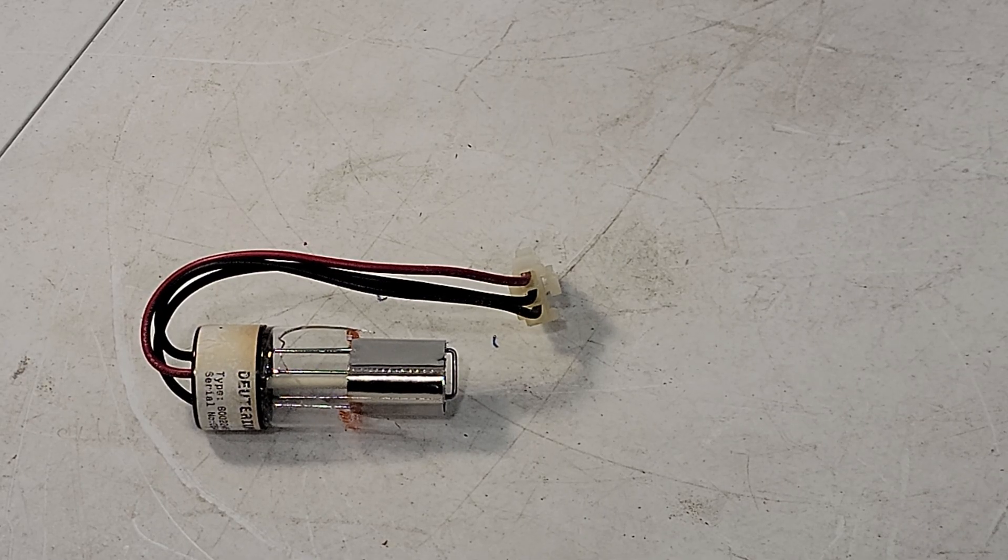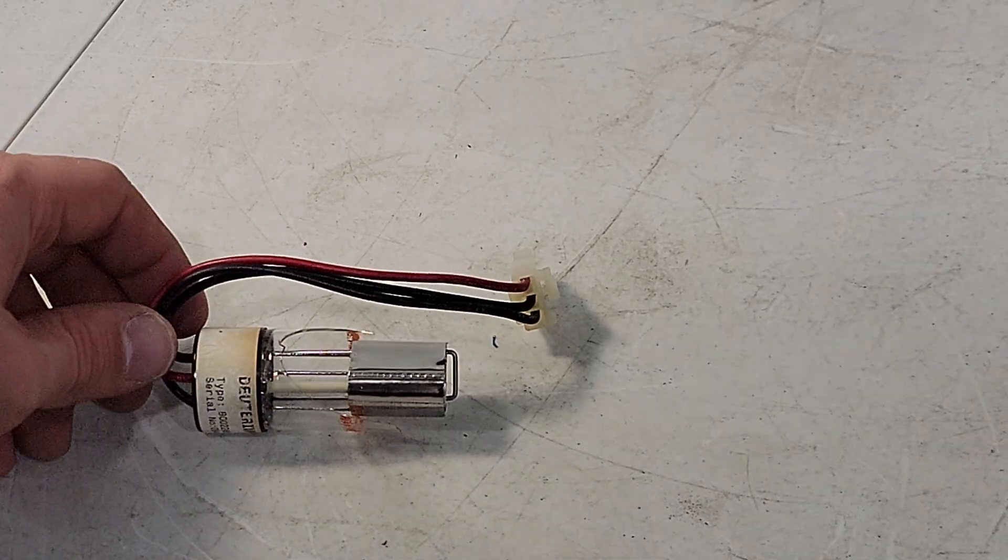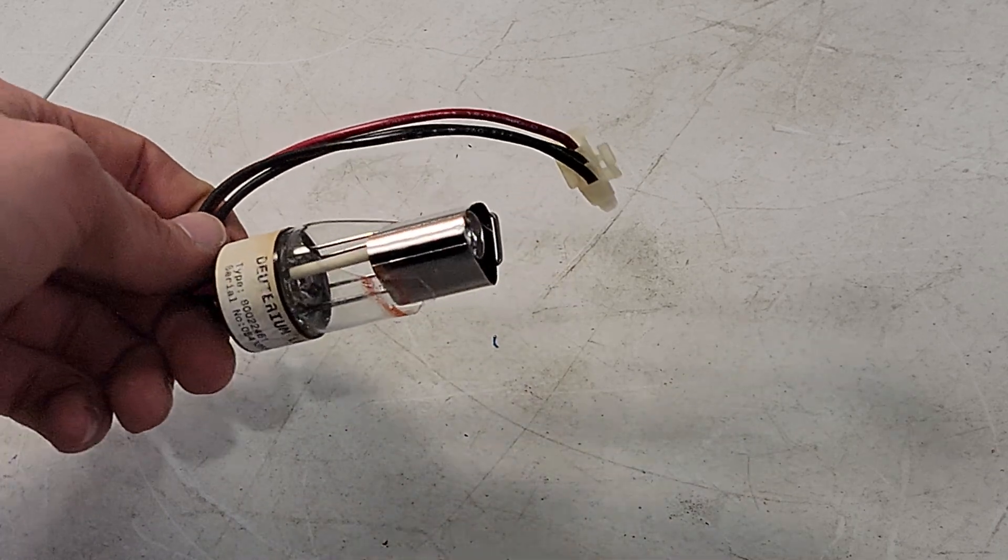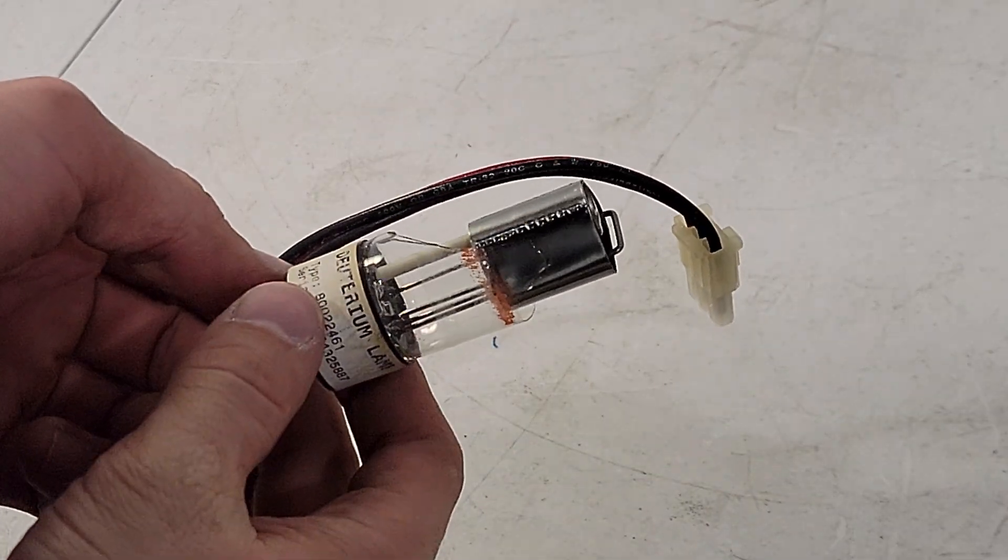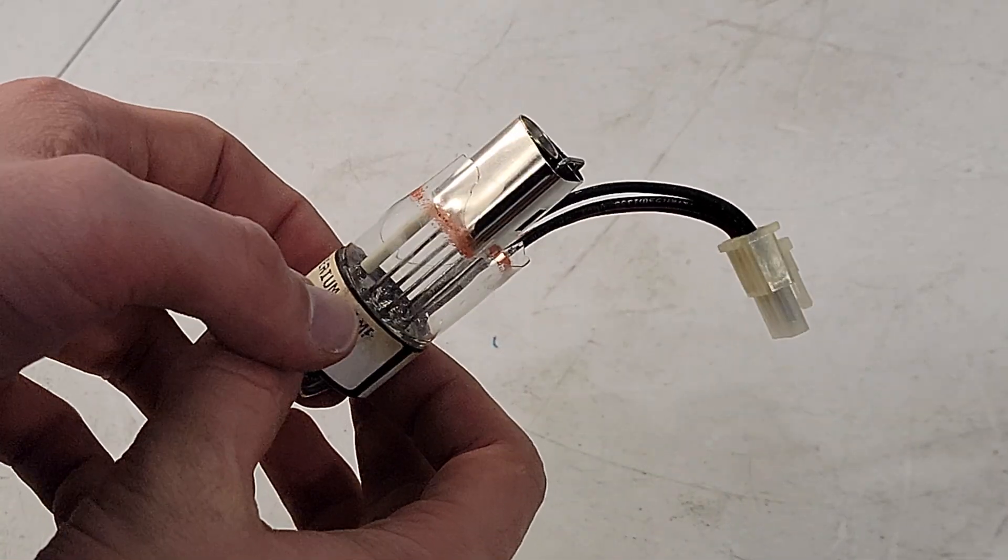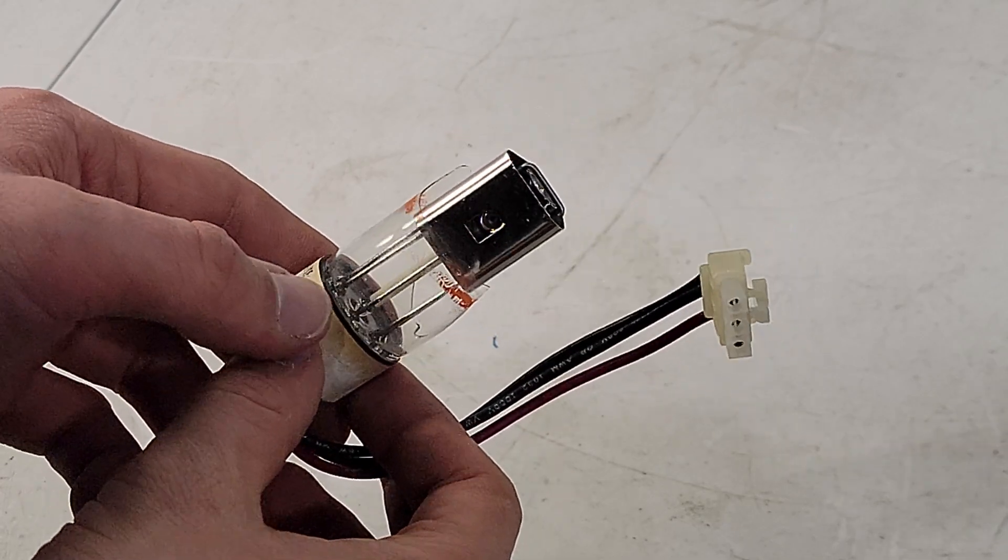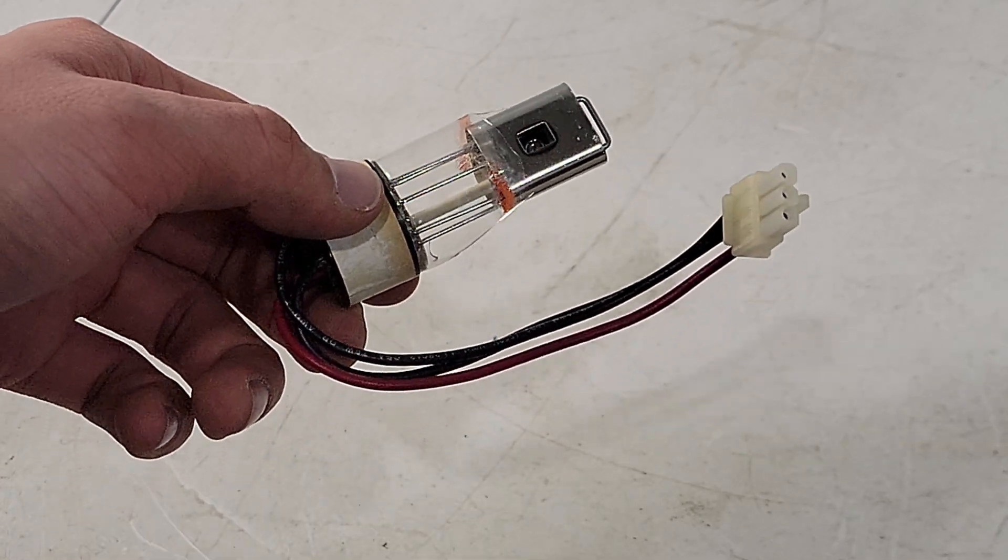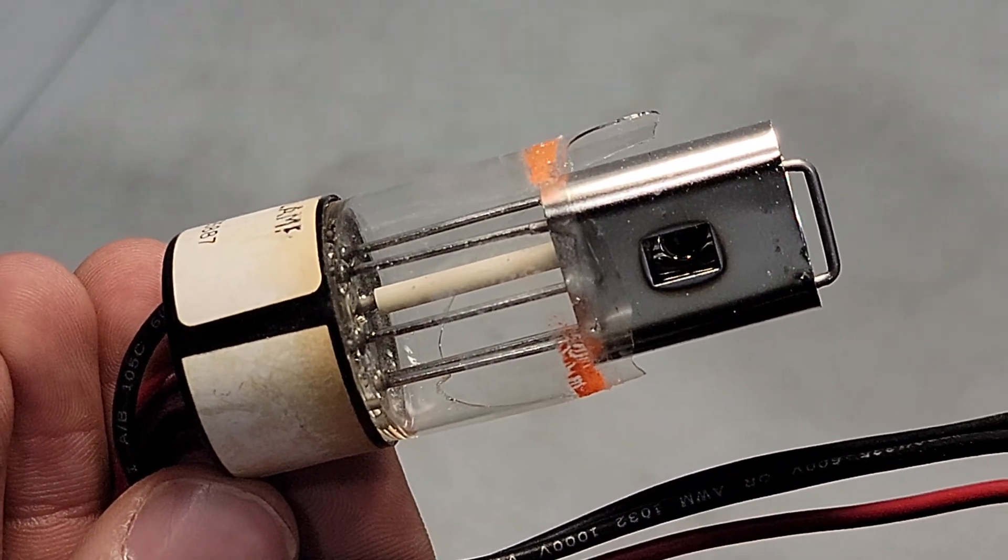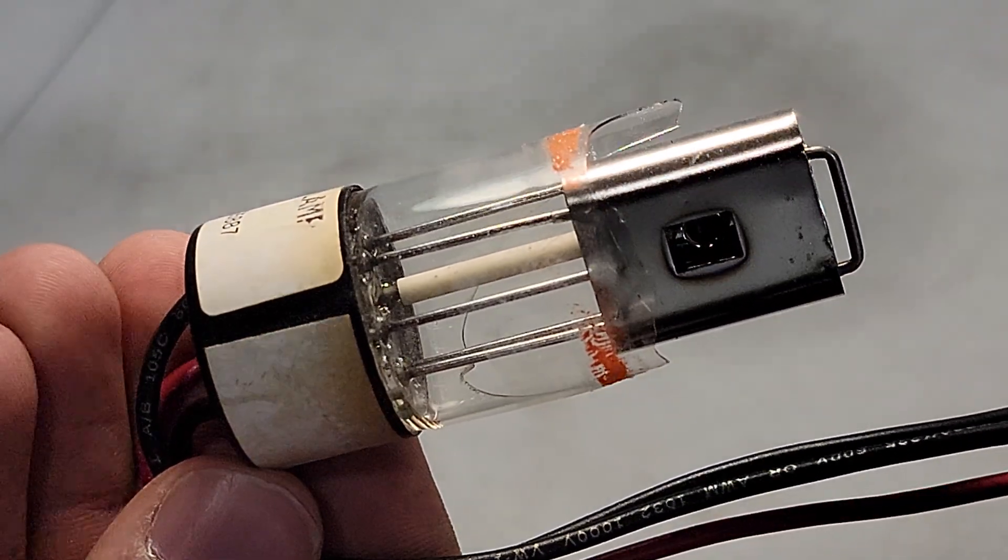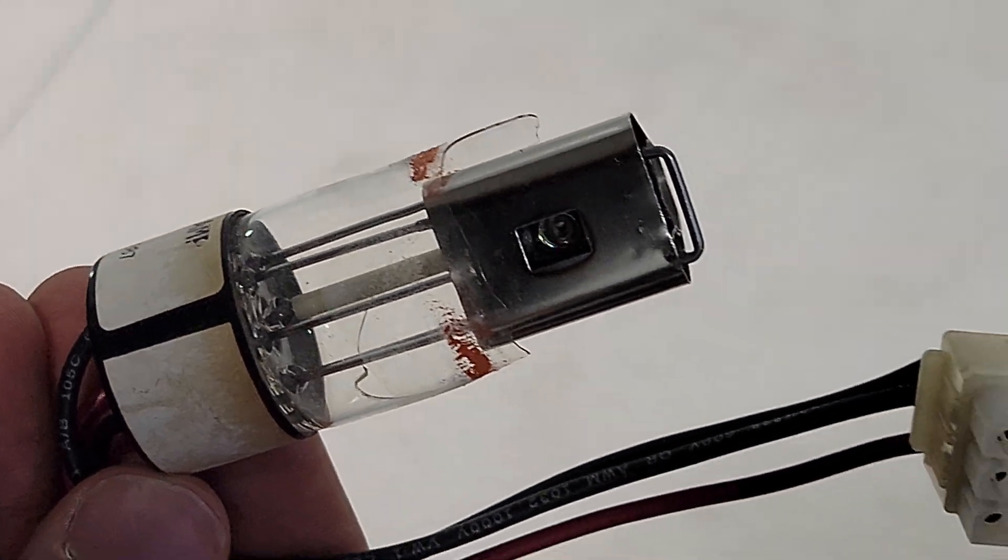Now, because normal glass blocks most of the UV light spectrum, these lamps are almost always encased in quartz. The quartz keeps all of the deuterium gas trapped in a lamp where the arc can excite the molecules into a higher energy state. As the molecules relax back down, they emit photons of light, which create the emission spectrum of the lamp.